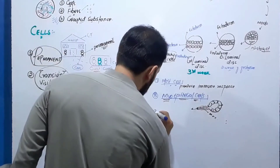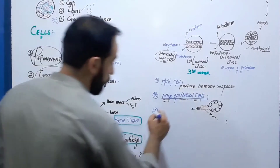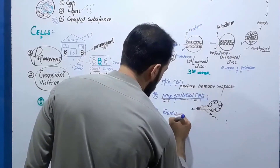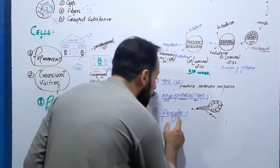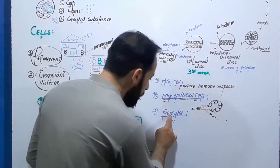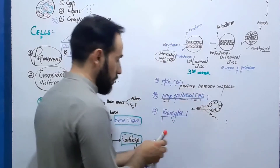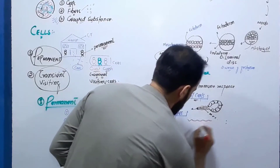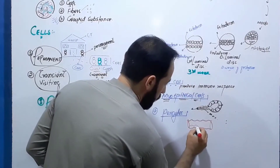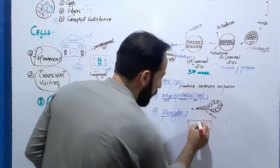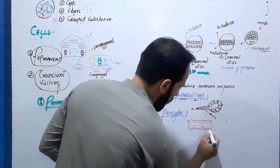Another type of permanent connective tissue cell is the pericyte. 'Peri' means around, and 'cyte' means cells — so pericytes are cells present around other cells. They are found around blood capillaries. In a blood capillary, there are endothelial cells, and below the endothelial cells there is the basement membrane. Pericytes are actually present within this basement membrane.